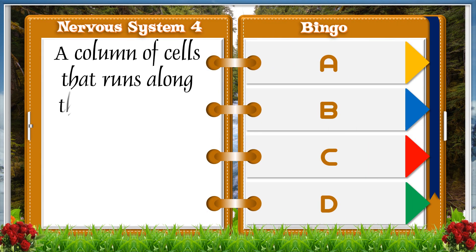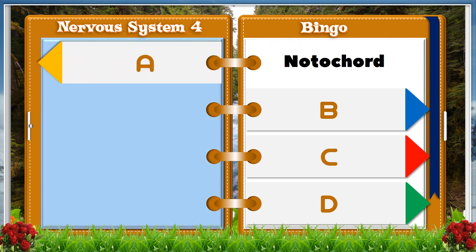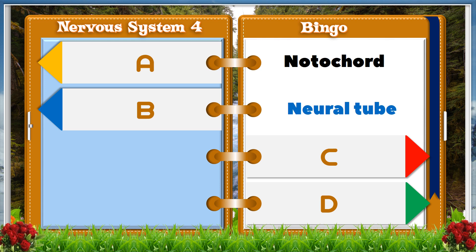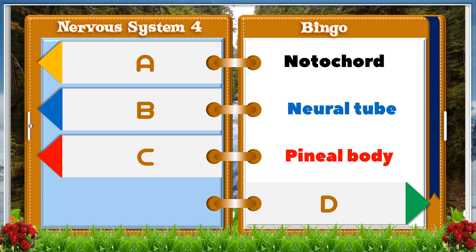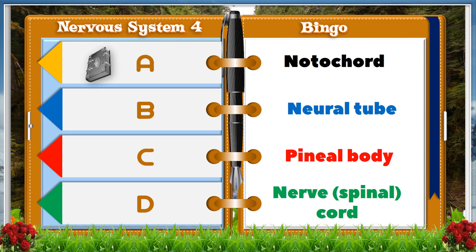A column of cells that runs along the length of the embryo around which the vertebral column develops. A. Notochord. B. Neural tube. C. Pineal body. D. Nerve cord. And the answer is A. Notochord.